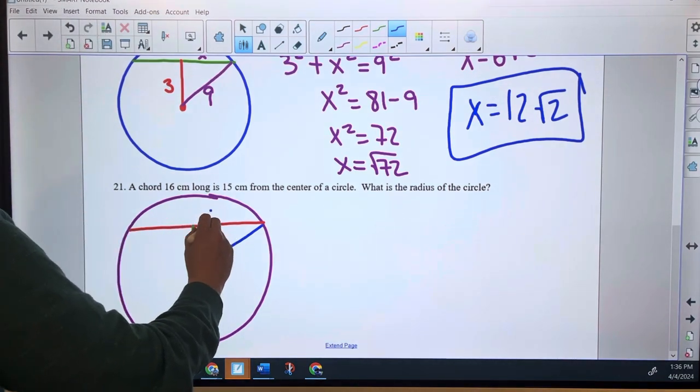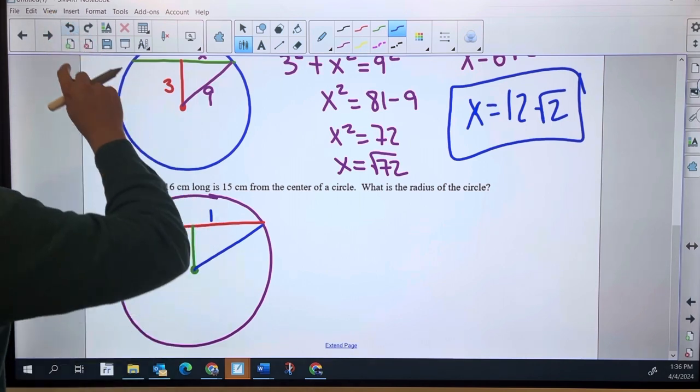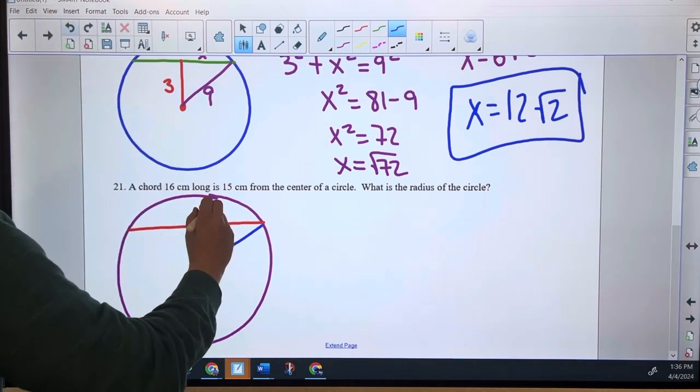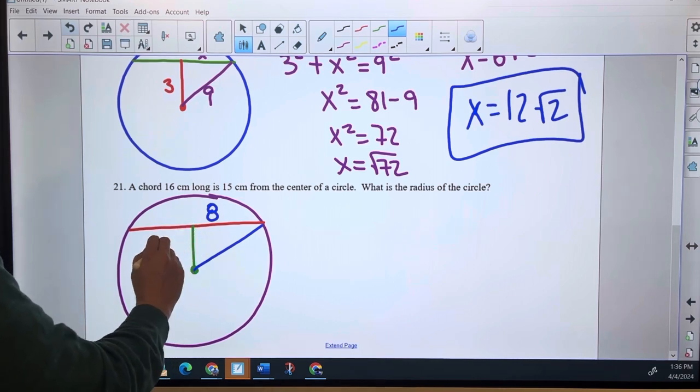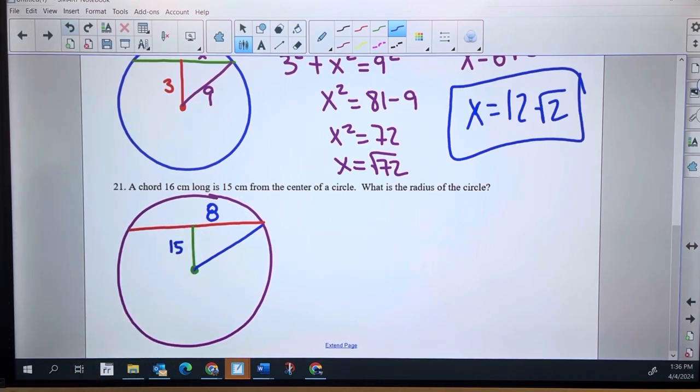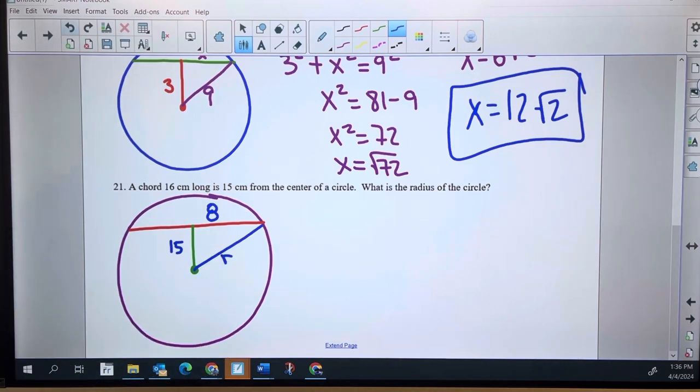The chord is 16, which means this piece of it is eight. 15 centimeters, so 15 for the green, not drawn to scale. And what is the radius? So there's R.